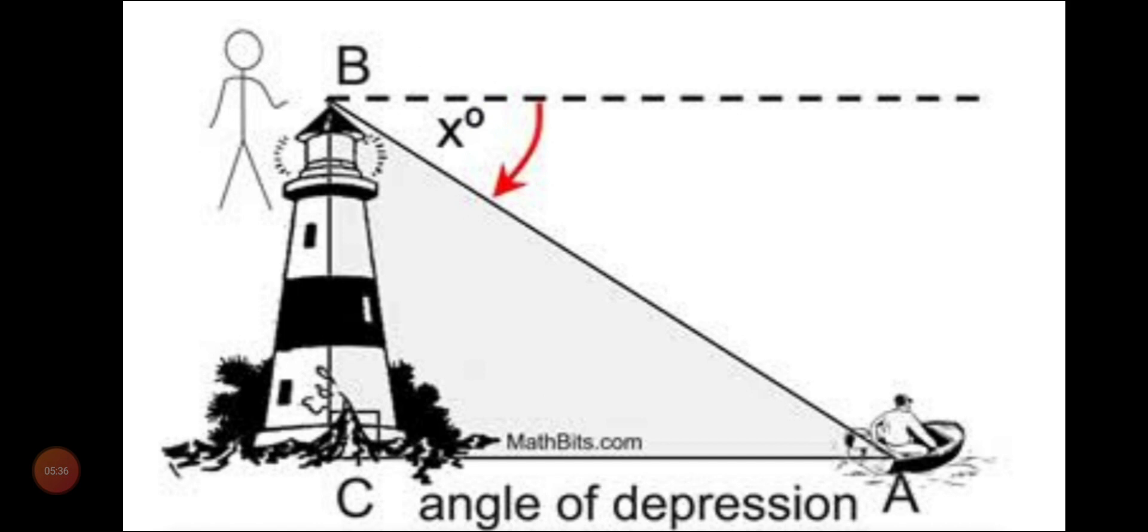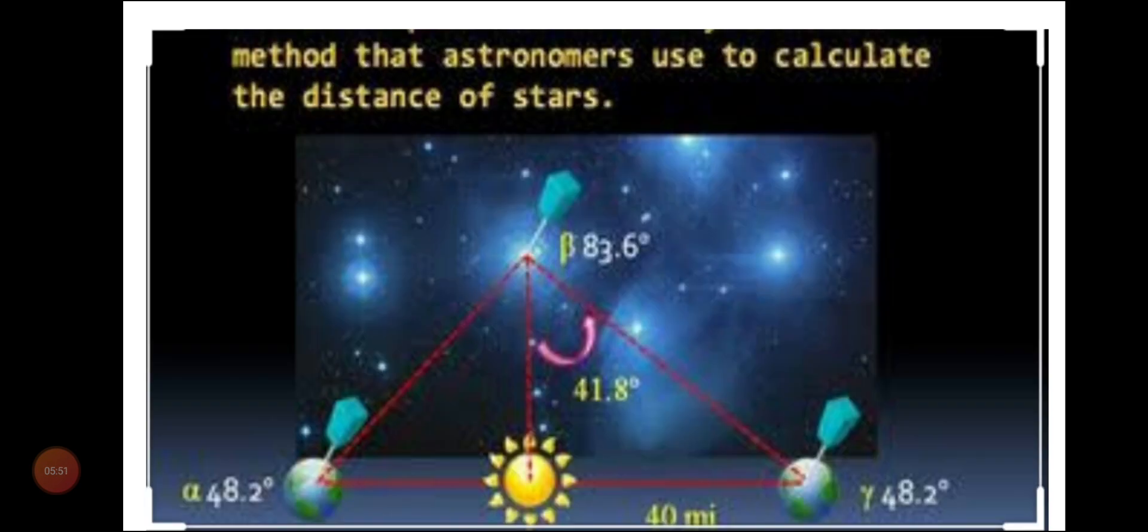Here one more example is there. A lighthouse you can see in the picture and a boat is floating on the water. If I want to check how much far I have to throw this light, then I will use trigonometry. In case of solar system also, method that astronomers use to calculate the distance of stars from the sun or other planets, we can use trigonometry.